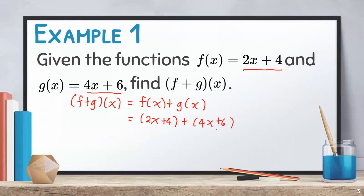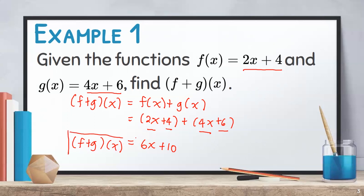In simplifying this expression, note that we can only combine similar terms. Similar terms are terms with the same variables and exponents respectively. The similar terms here are 2x and 4x, and 4 and 6. Combining them, 2x plus 4x equals 6x, and 4 plus 6 equals positive 10. Therefore, f plus g of x equals 6x plus 10.